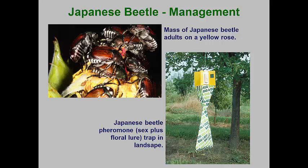Some newer systemic insecticides are retained in the plant tissues, and some of these have residual activity for three to four weeks, which is sufficient to cover most of the adult feeding activity period. The key is to get the treatment out when the first adults emerge so as to lessen any plant damage that attracts more beetles. Japanese beetle traps are commonly sold in garden centers and online, but these are not recommended as they draw more beetles into the landscape and are only about 60% effective in trapping the beetles. Research has shown that plants near traps often receive more damage than plants further away from the traps.